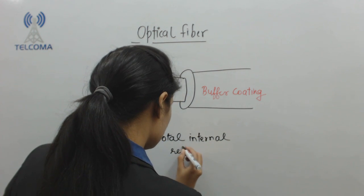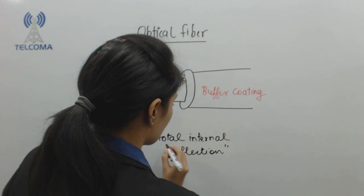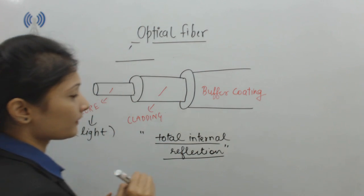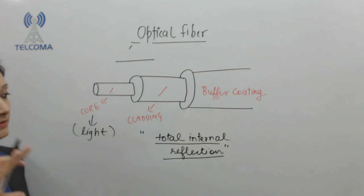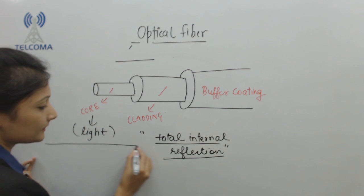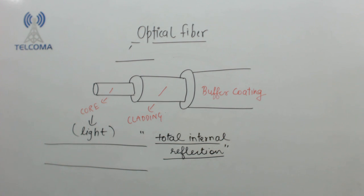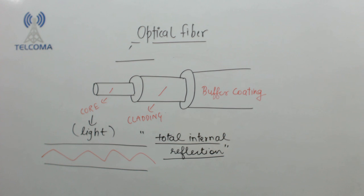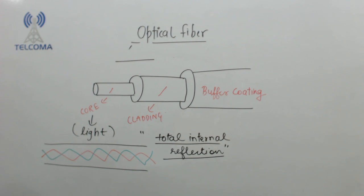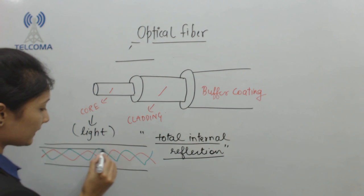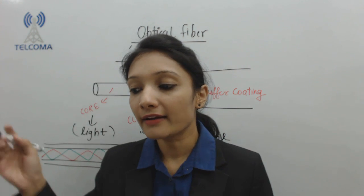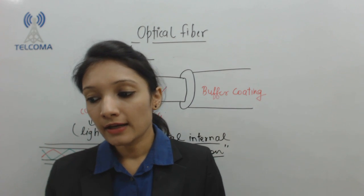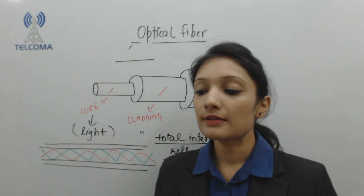Light is kept in the core and we use the principle of total internal reflection between the core and the cladding. This total internal reflection causes the fiber to act as a waveguide. The different light pulses travel through because of the difference in density of the material between the core and the cladding, causing total internal reflection, and the fiber acts as a waveguide for these light pulses.